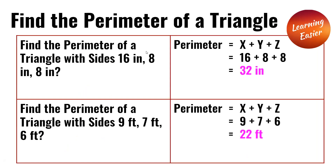Find the perimeter of a triangle with sides 16 inches, 8 inches, and 8 inches. 16 plus 8 plus 8 is 32 inches, and 32 inches is the perimeter of this triangle.